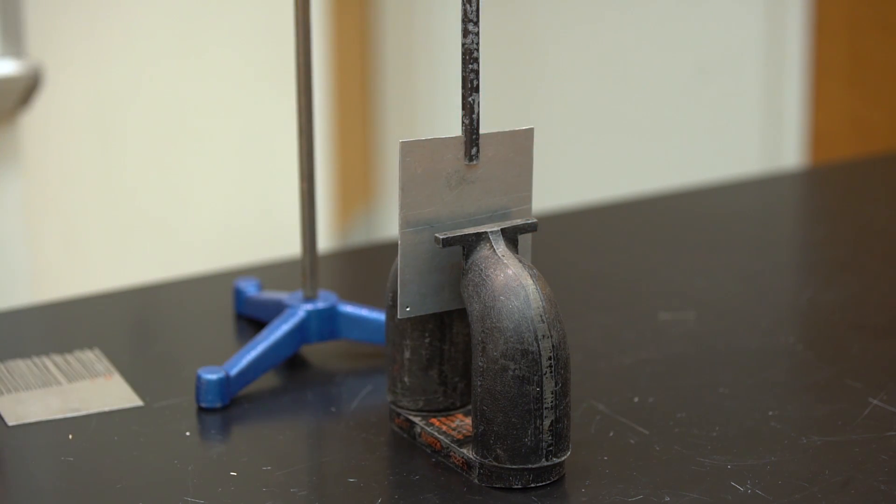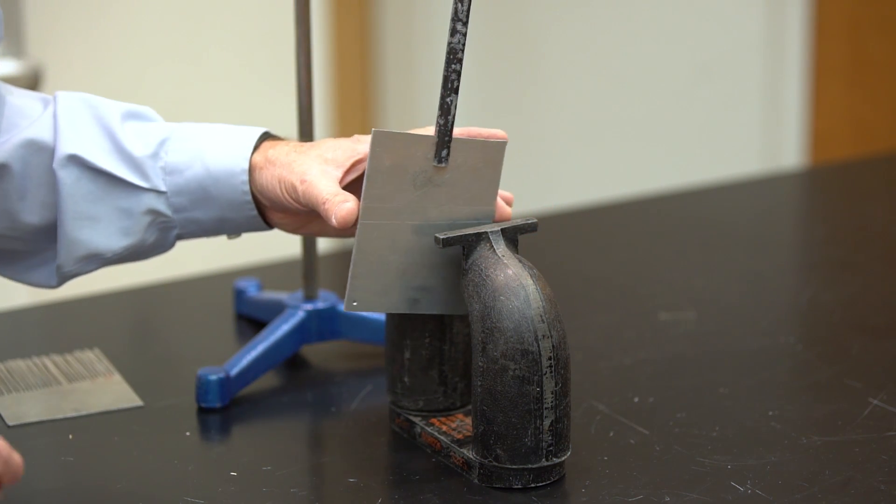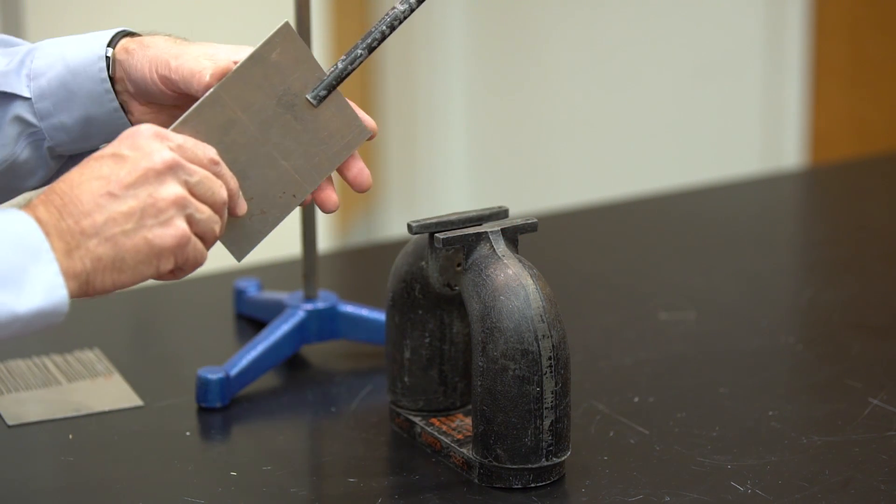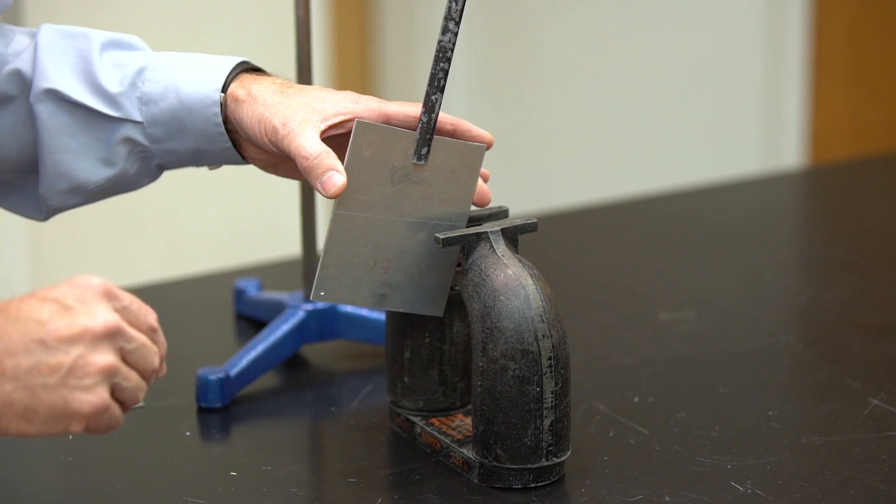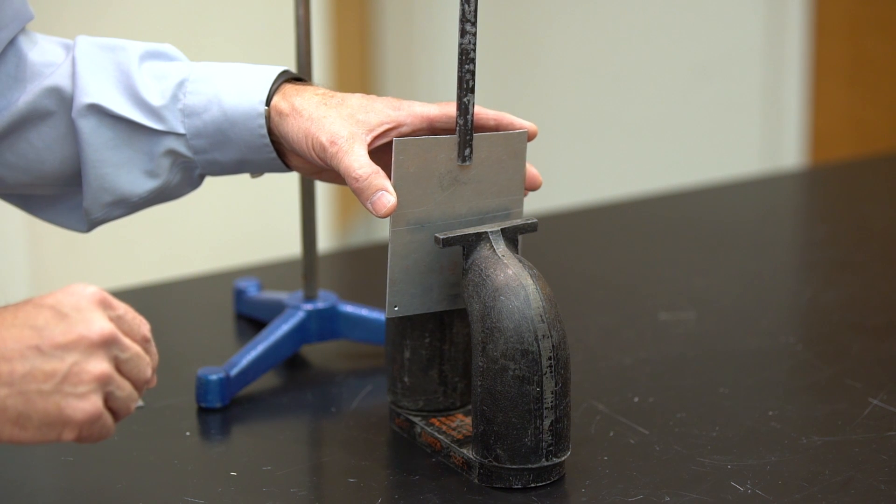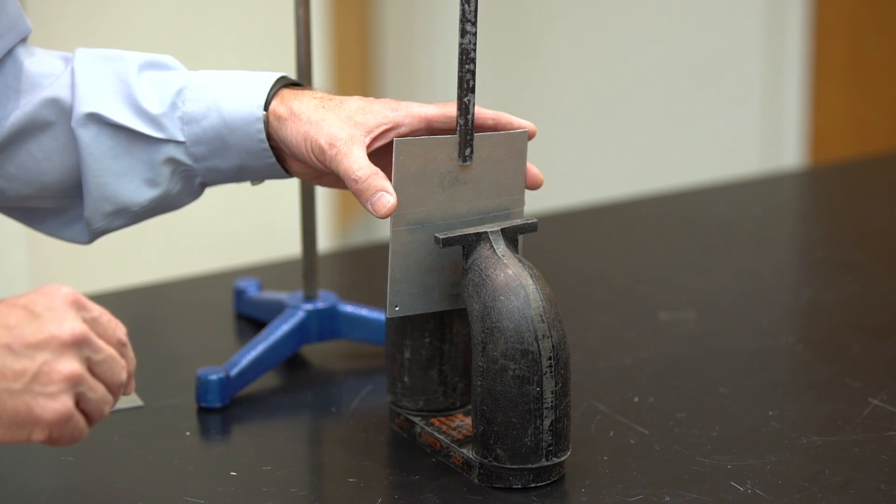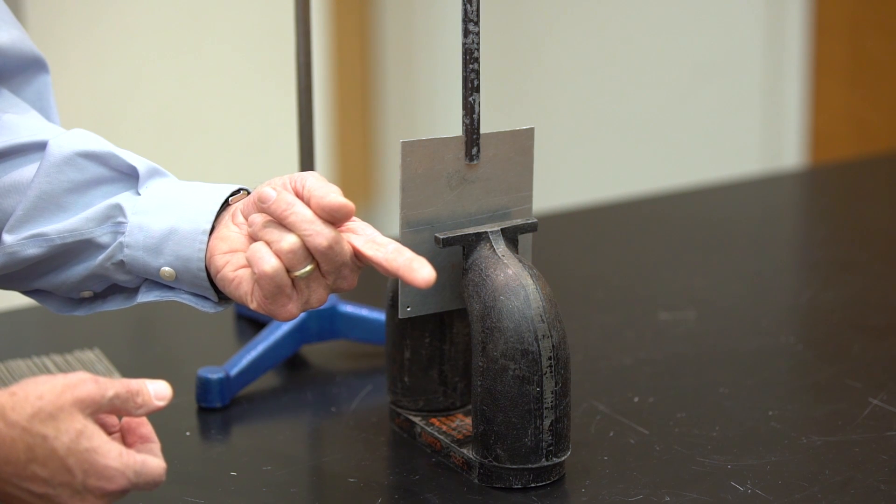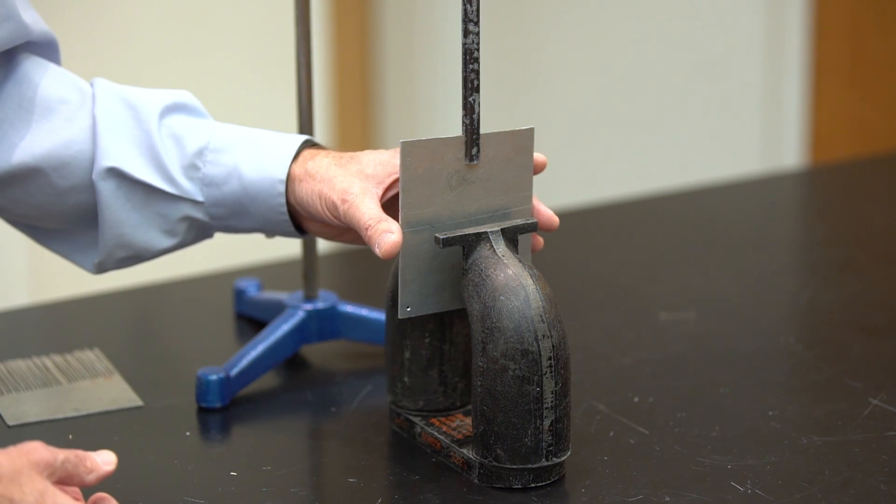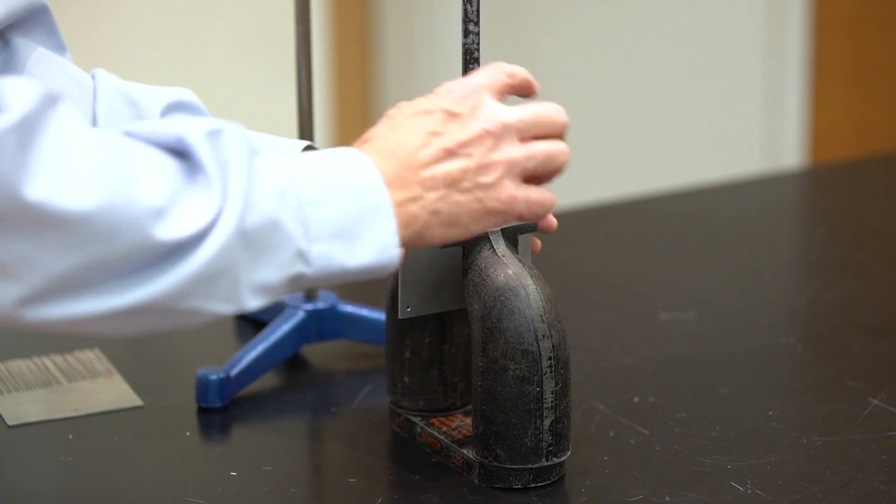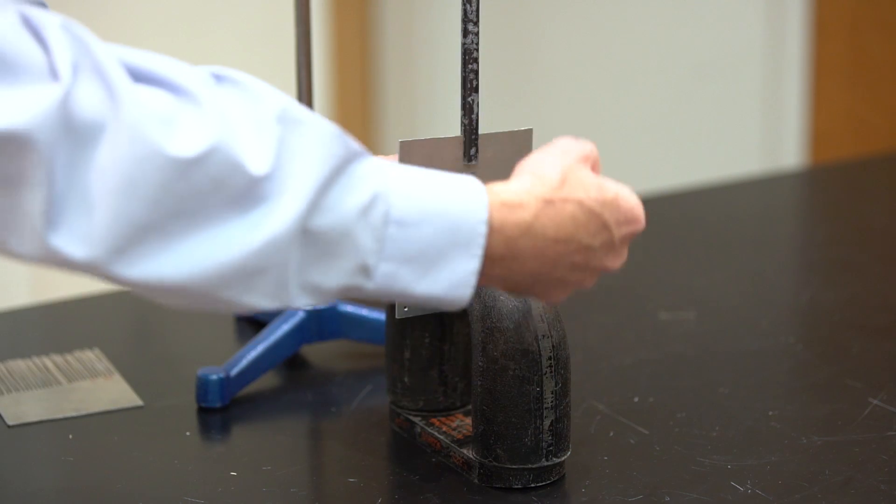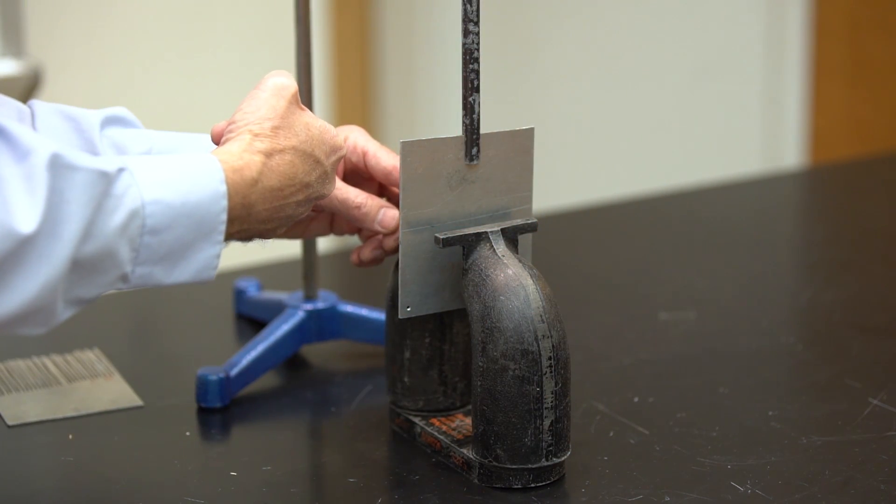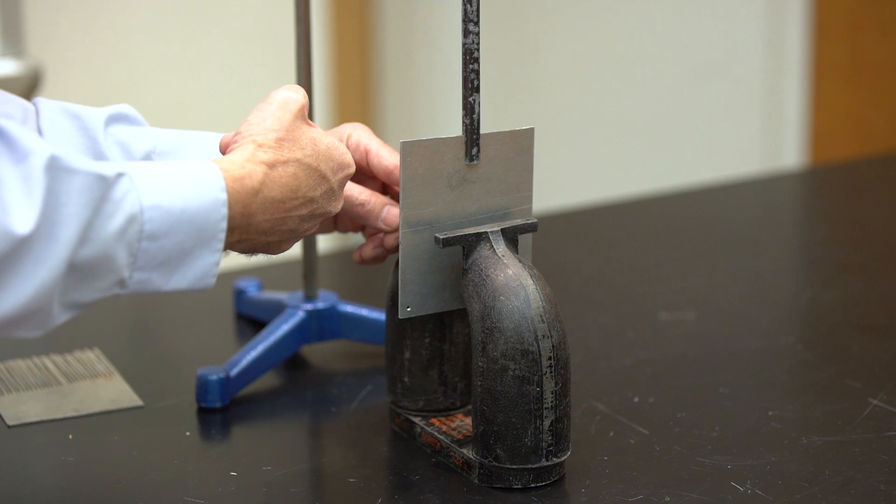And the direction of those can be determined by Lenz's law. If the magnetic field is in this direction, as the aluminum enters the magnetic field region, the magnetic flux is increasing. It's increasing in this direction. To oppose that increase, there are currents that go in this way that produce an induced magnetic field in the direction opposite the original magnetic field.